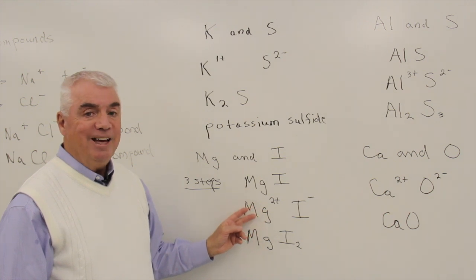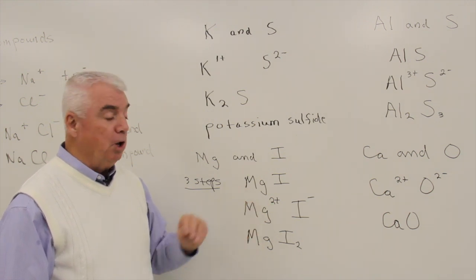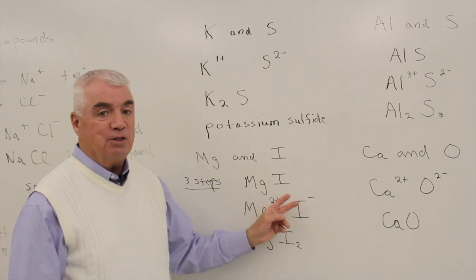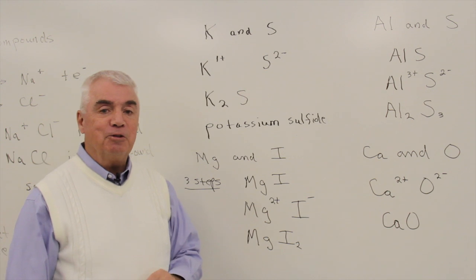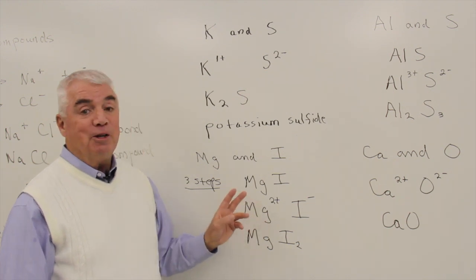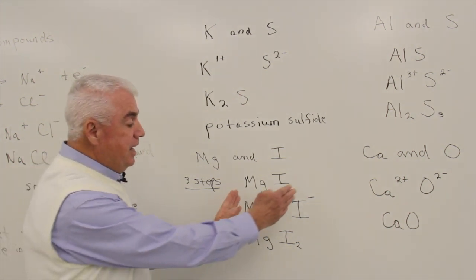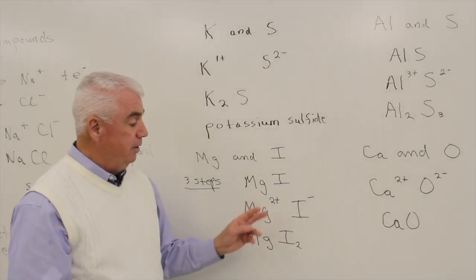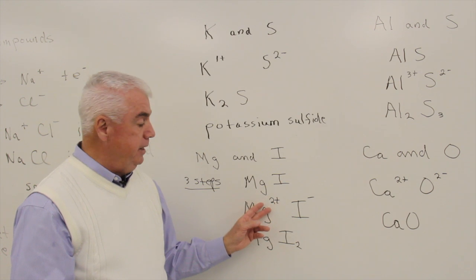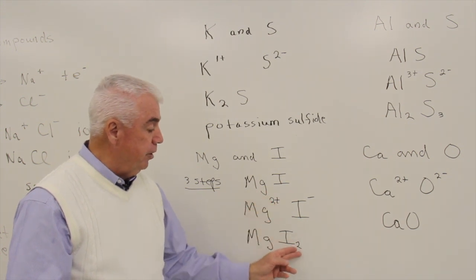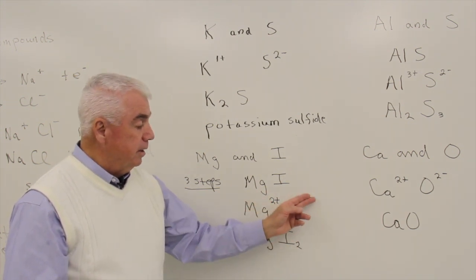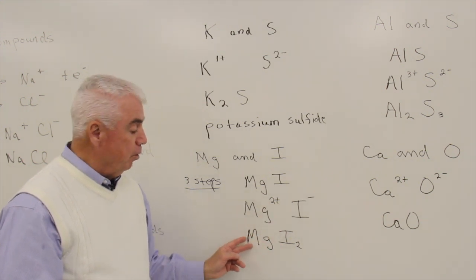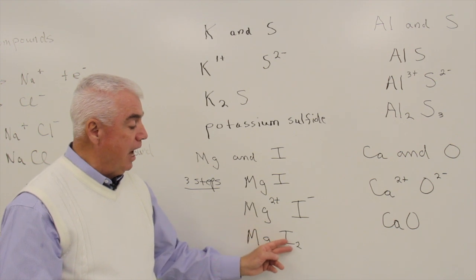Magnesium is in group 2A, so it likes to form a 2+. Iodine is in group 7A, it likes to form a 1-. And then here's something that always works. We'll simply take those numbers and switch them and use them as subscripts. That is to say, drop the sign and put the 2 down here with the iodine, and put the 1 of the iodine over here with the magnesium. The formula then is MgI2.